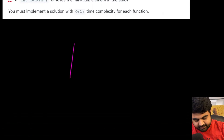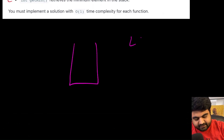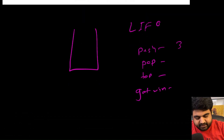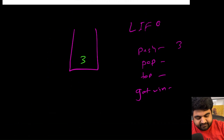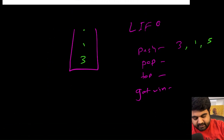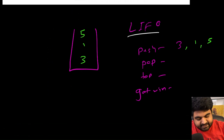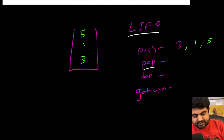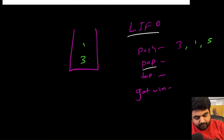We need to implement the MinStack class with all these methods. We know that a typical stack operates on the LIFO principle — last in, first out. If we push element three, then one, then five, we have three elements in the stack. If we pop, the element five pops out, so we get answer five.